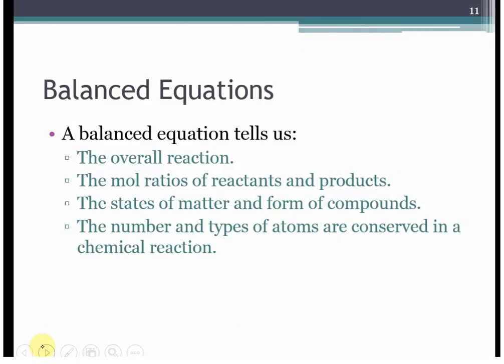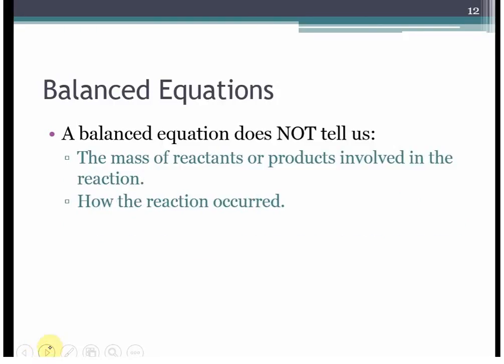So remember, a balanced equation is going to tell you the overall reaction with mole to mole ratios of reactants and products. It's going to give you the states of matter, and it's going to tell you the compounds. It should also allow the types of atoms to be balanced on both sides of the arrow. Balanced equation has absolutely nothing to do with mass, and it does not tell us how the reaction happened, only what occurred. We don't get to how until basically you get to organic chemistry. So we do have some information that's missing there. If you need more practice on balancing equations, just send me an email or look under one of your homework sets.